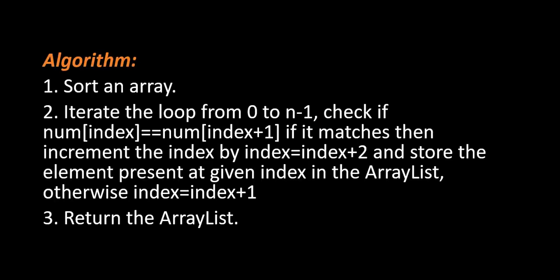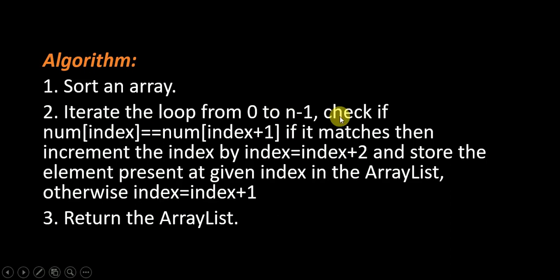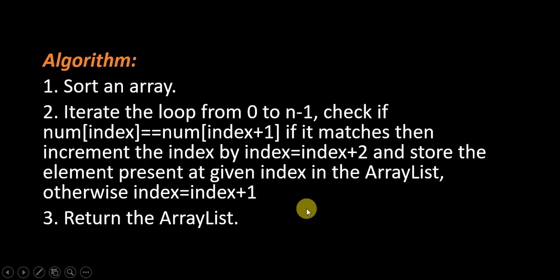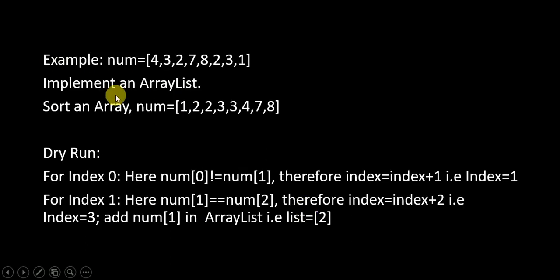First we will see the first approach using sort function. The algorithm: first we sort the array, then we iterate a loop from 0 to n minus 1. We check whether the element at index i is equal to the element at index i plus 1. If it matches, we increment the index by 2 and store that element in the array list; otherwise we increment the index by 1. Finally we return the array list.